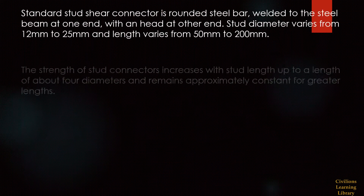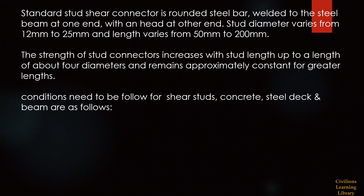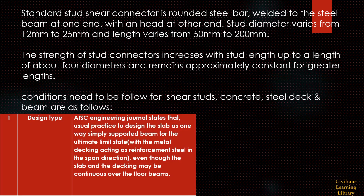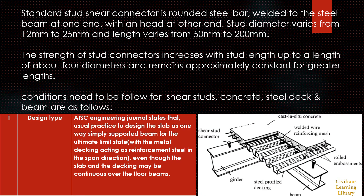A standard stud shear connector is a rounded steel bar welded to the steel beam at one end and headed at the other end, like a connection bolt. The stud diameter varies from 12 mm to 25 mm and its length varies from 50 mm to 200 mm. The strength of the stud connectors increases with stud length up to about 4 times the stud diameter, and remains approximately constant for greater lengths.